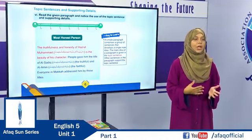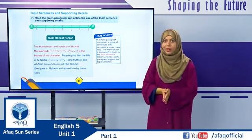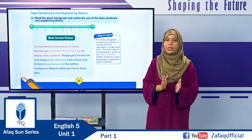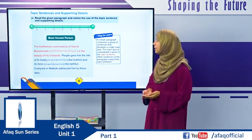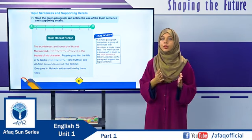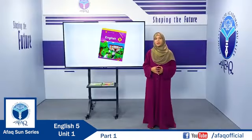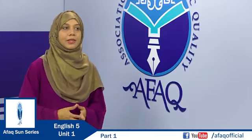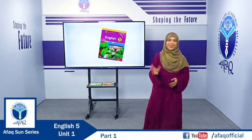Now I want you to read the story An Orphan's Eid again and notice the use of topic sentences in each paragraph. Also notice how each paragraph uses supporting details to support the main idea. Discuss it with your friends, parents, teachers, or siblings, and then come back. This is the end of today's lesson on the new Afaq Son Series English Grade 5. I hope you have understood all the concepts covered. Revise on your own, and I will see you in the next video. Allah Hafiz.